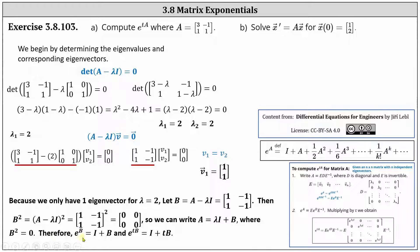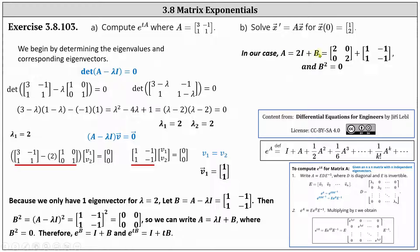We get this by applying the matrix exponential definition: since B squared equals zero, every term after the second term has a factor of B squared and is therefore zero, leaving e to the B equal to I plus B. Similarly, e to the tB equals I plus tB. In our case, A equals two I plus B, so e to the tA equals e to the power of two tI times e to the power of tB, since these matrices commute.